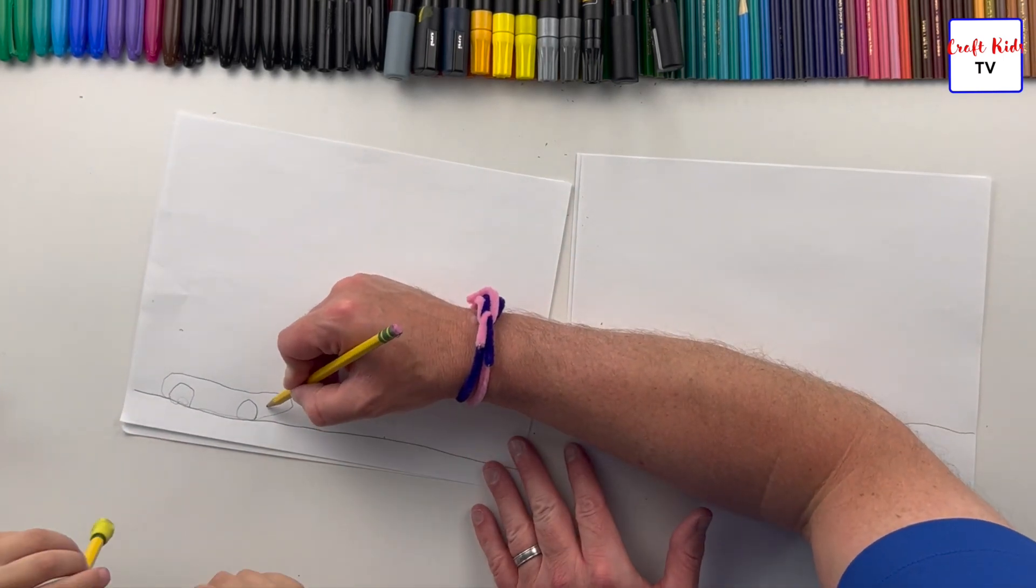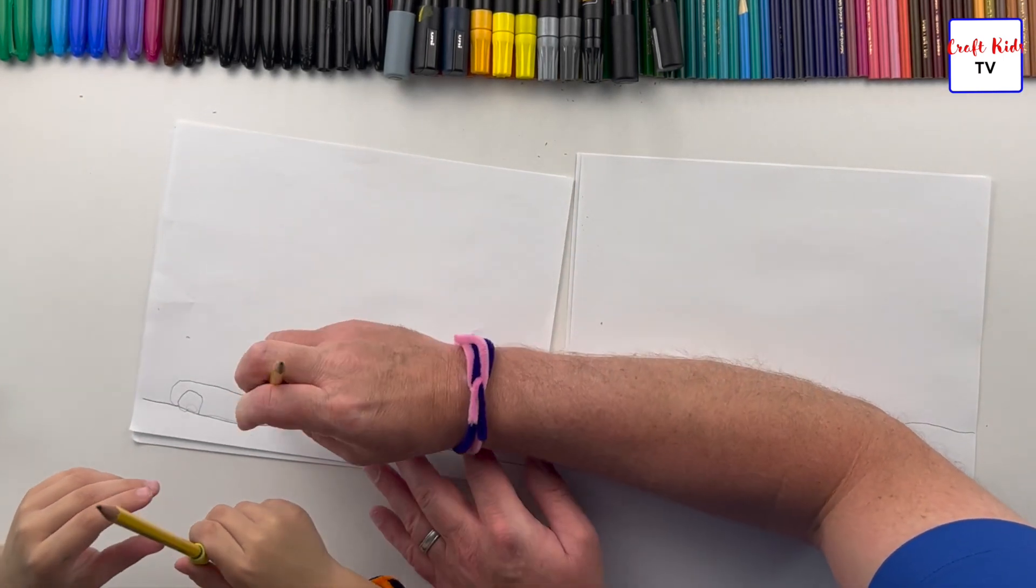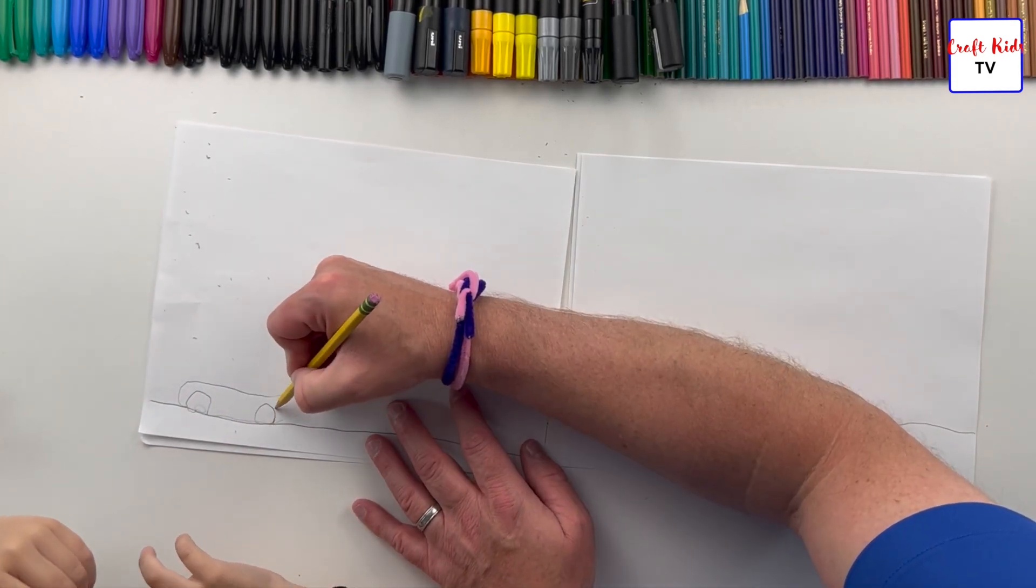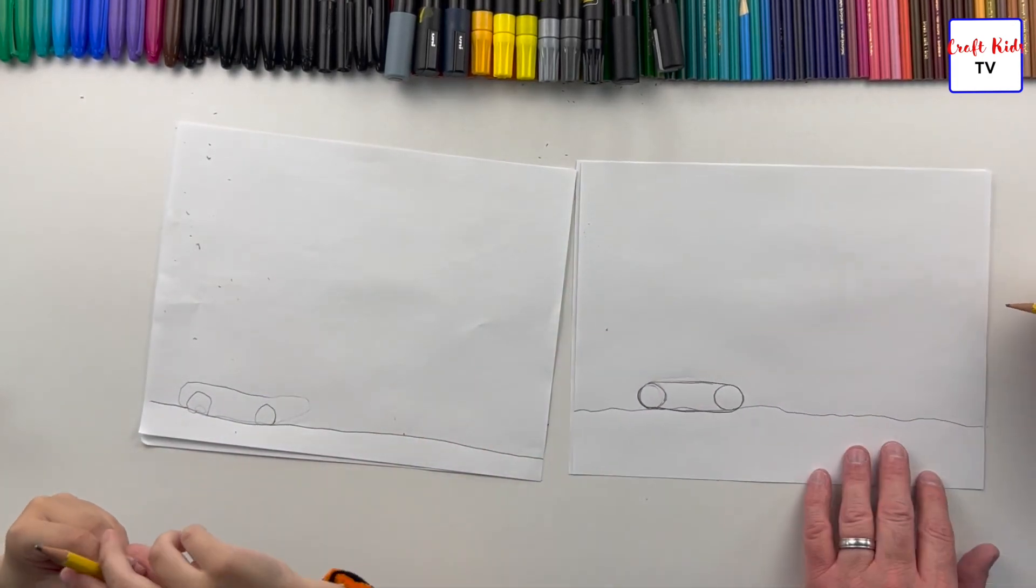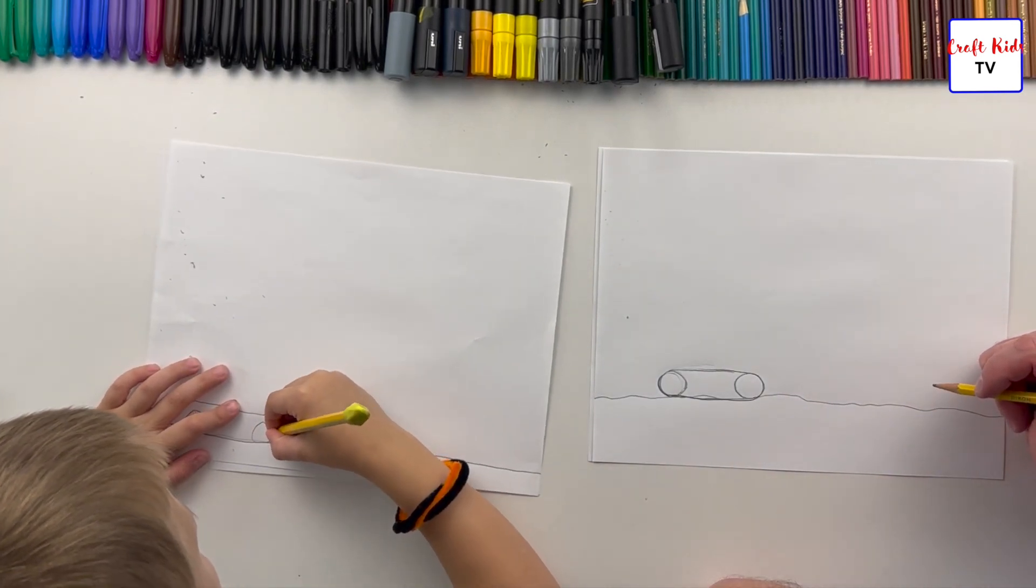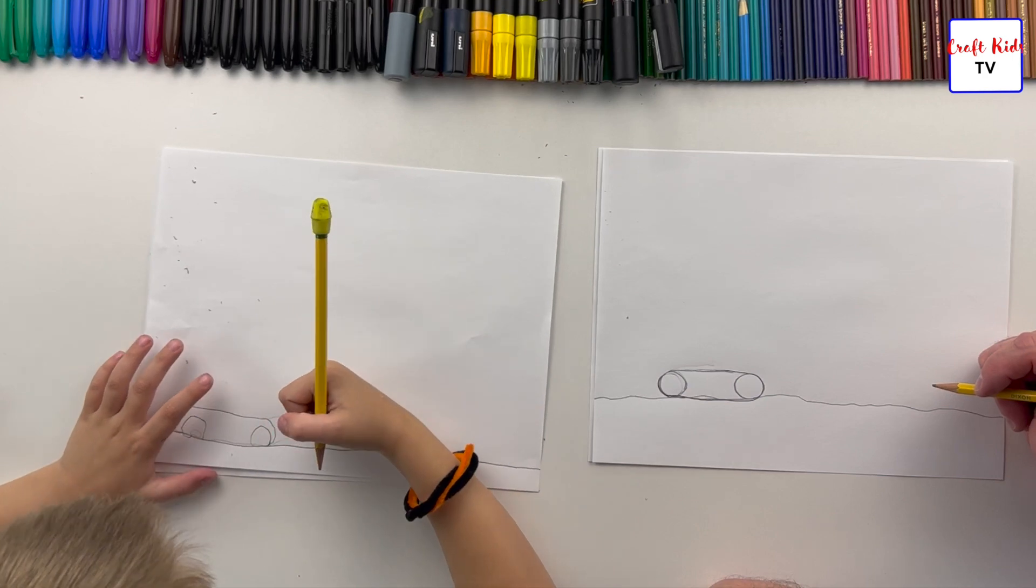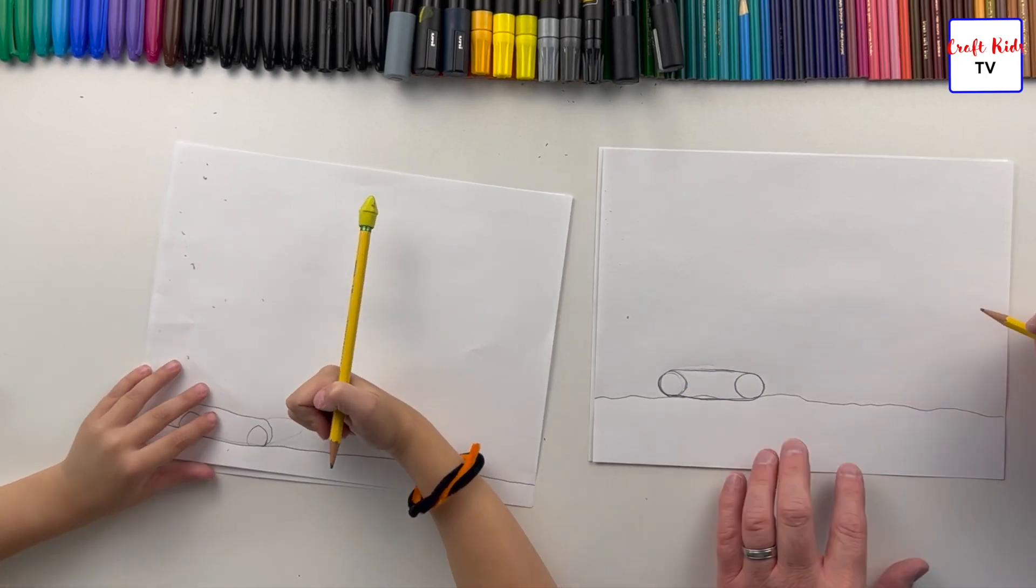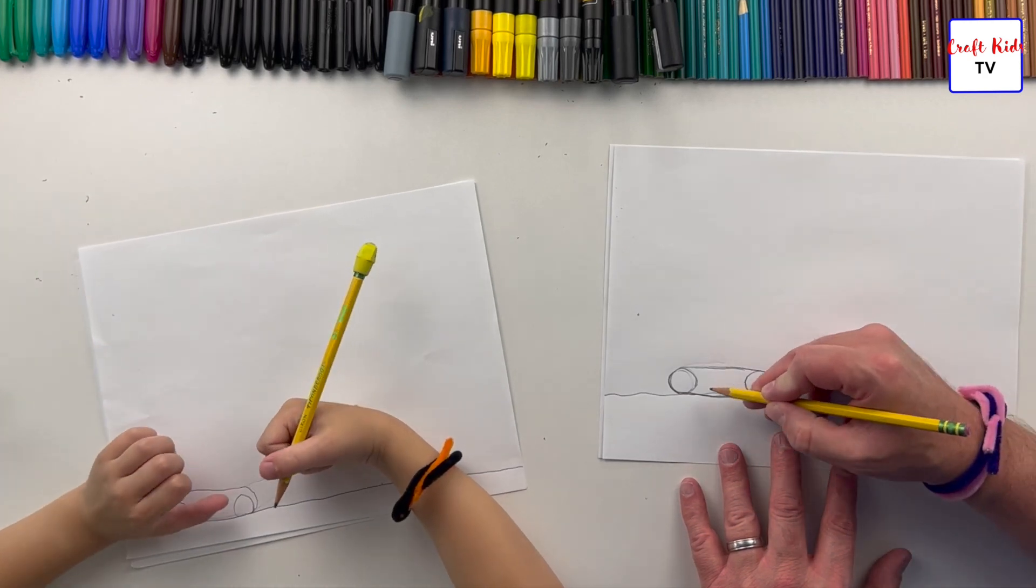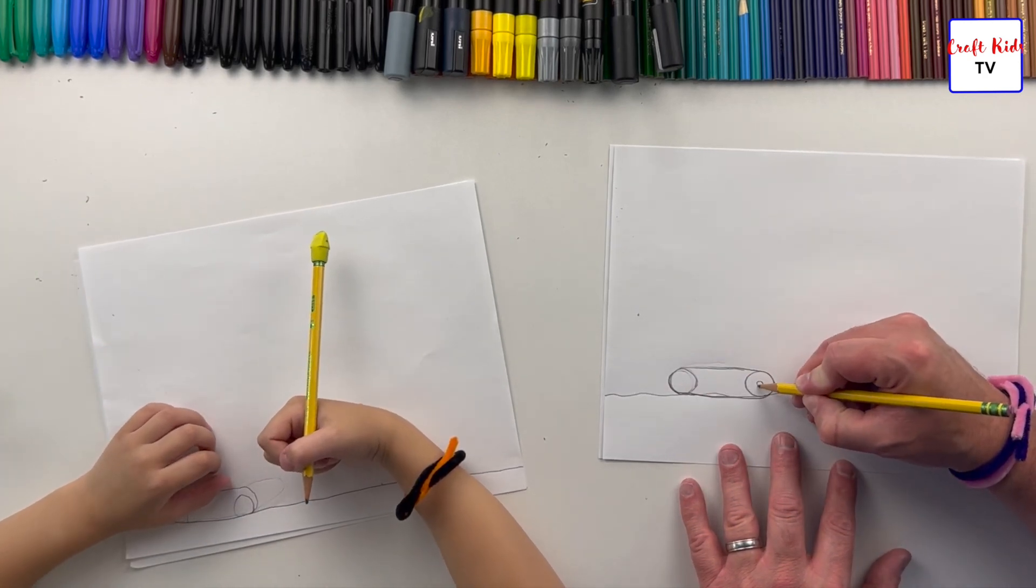You know what, we'll make an adjustment with yours. We'll put some wheels down here, or we can erase it. Do you want to erase it? Just bring that right around. Okay, now in the center of each circle, we're going to make a little dot.